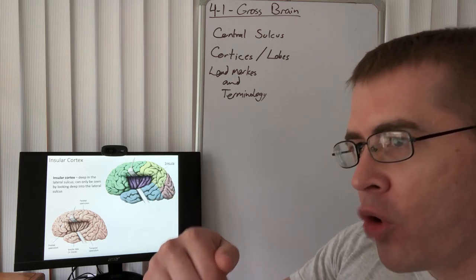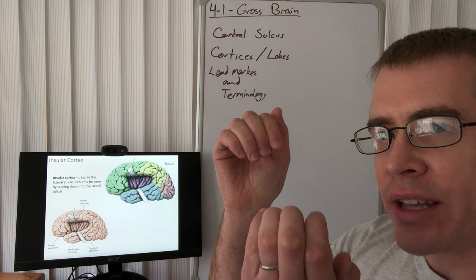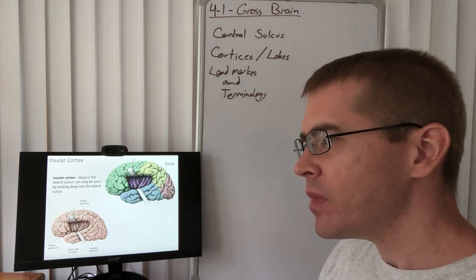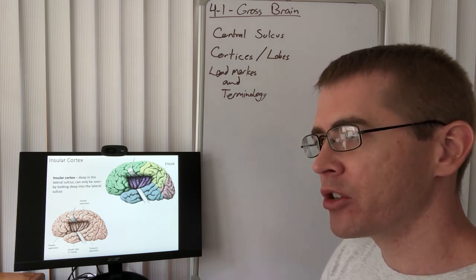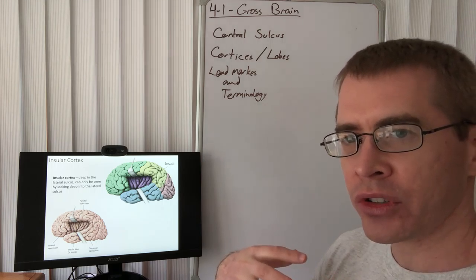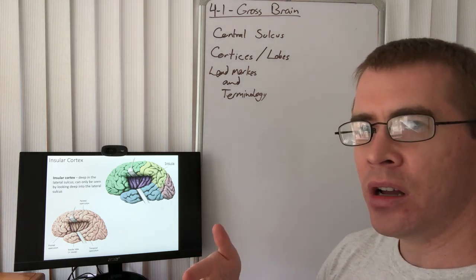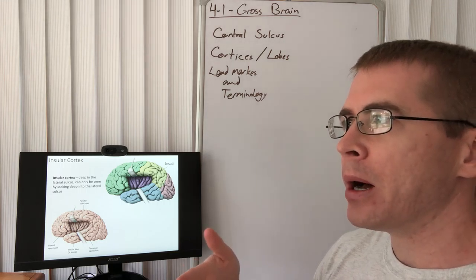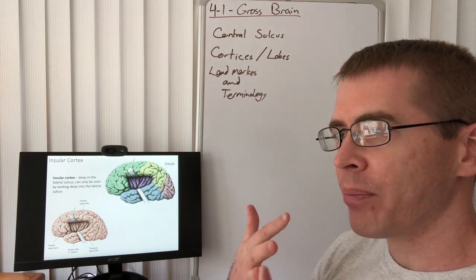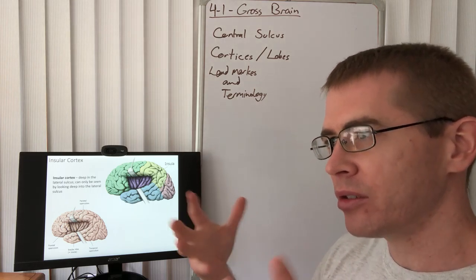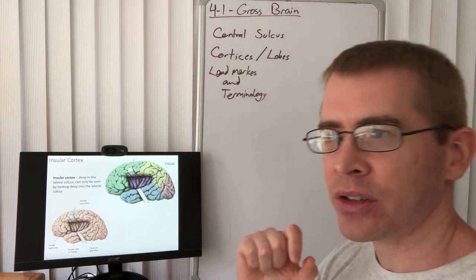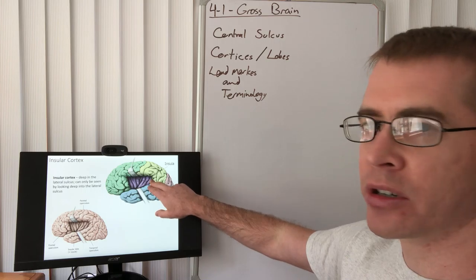And finally, if we open up the lateral sulcus and look inside, we will see the insula or the insular cortex, which is responsible for a number of interesting things, including monitoring internal kind of visceral sensations, things like emotions and hunger, those kinds of survival-oriented passions, like those drives, as well as it contains the primary auditory cortex in the posterior portion.